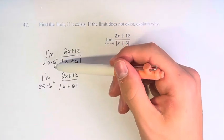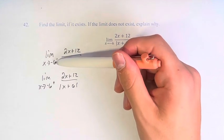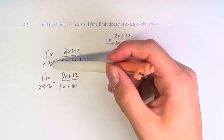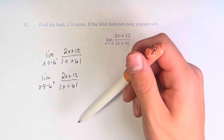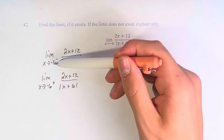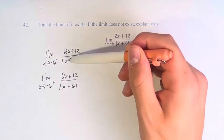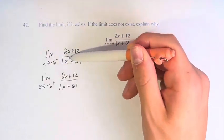If we're approaching from the left, that means we have values that are slightly less than negative 6. So think about that as negative 6.0000001, right? If we're plugging values like that into this, if we're adding 6 to that number, it's going to be very, very close to 0, but it's going to be negative.